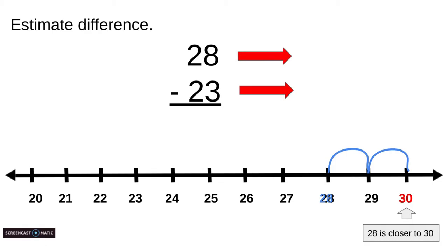So we have 28 equals 30. That's the estimate. Now we find 23 in blue. Is 23 closer to 20 or 30? Let's count the hops. One, two, three. 23 is three hops away from 20, so it is closer to 20.